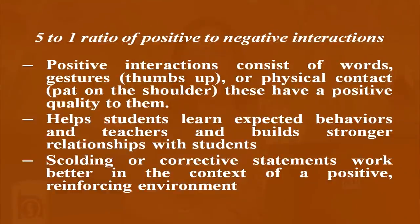Next is a 5-to-1 ratio of positive to negative interactions. Positive interactions consist of words, gestures like thumbs up, or physical contact like a pat on the shoulder. These have a positive quality that helps students learn expected behavior and builds stronger relationships with students. Scolding or corrective statements work better in the context of a positive reinforcing environment.